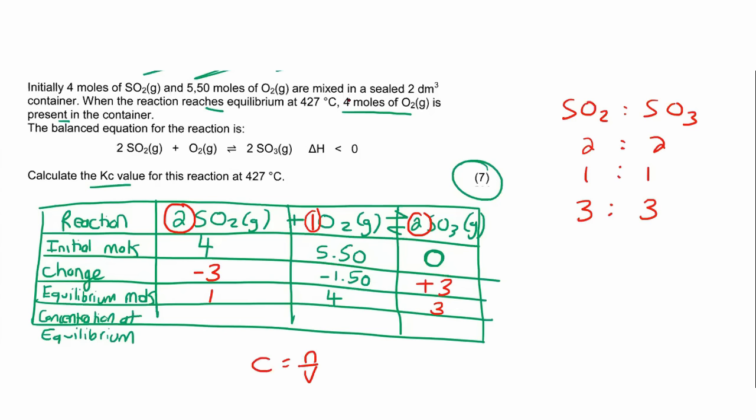Now to work out concentration, we are going to use the formula C equals N over V. And the volume has been given to us as 2 decimeters cubed. So I can say that the concentration here will be 1 over 2, 4 over 2 which is 2, and then 3 over 2 which is 1.5, and this one is 0.5.